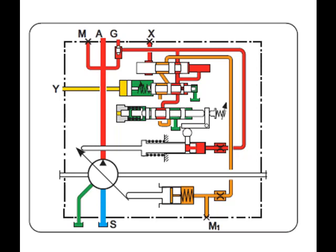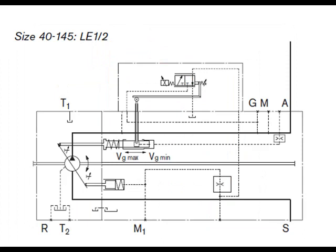The required control pressure is taken either from the load pressure or from the externally applied control pressure at port G. To ensure functioning of the stroke limiter even at low operating pressure, port G must be supplied with external control pressure of approximately 30 bar. Note: if no external control pressure is connected at G, the shuttle valve must be removed.